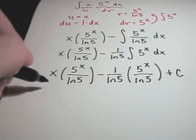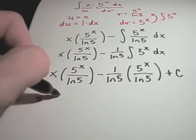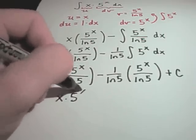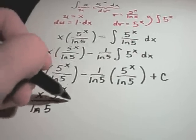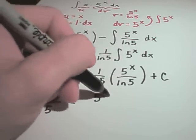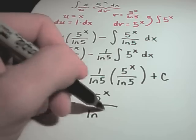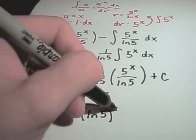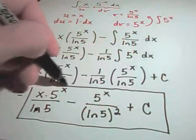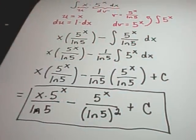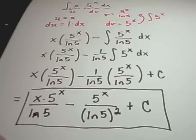And, again, if you wanted to, you could rewrite this maybe as x times 5 to the x over ln of 5. There's my first term. And, I've got a 5 to the x in the numerator. And, now I have an ln of 5 quantity squared in the denominator plus c. And, again, there is our anti-derivative of x times 5 raised to the x.